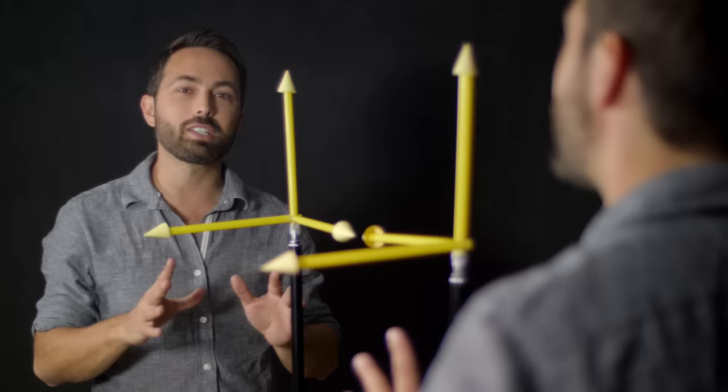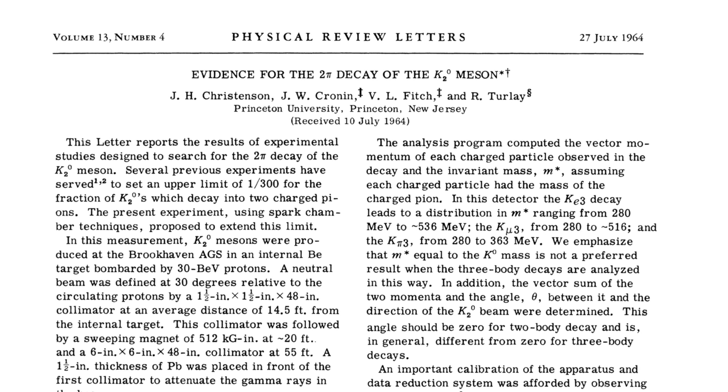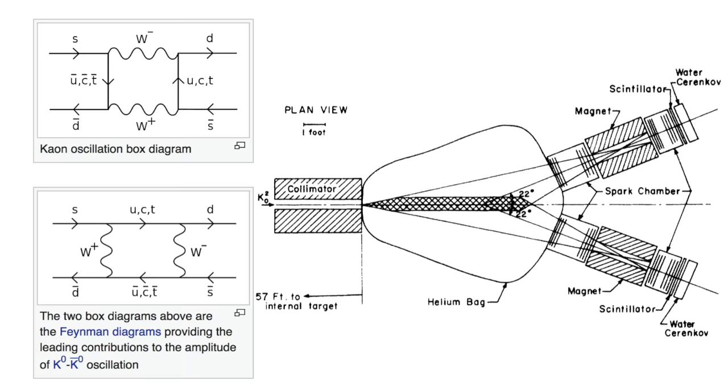Now this gave physicists some comfort, until in 1964 it was found that some particles can also violate the combined charge parity symmetry. And boom, you got yourself another Nobel Prize.